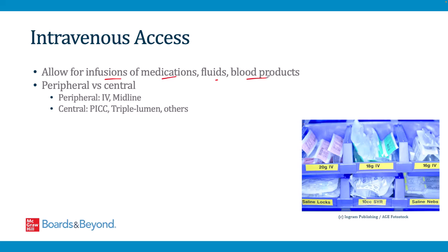IV access can be considered peripheral or central. Peripheral access is when the line terminates in a vein in an extremity, usually an arm, and can include standard IVs or midlines. Central intravenous access is when a catheter terminates in a central vein that feeds the right side of the heart — either the superior or inferior vena cava. Central lines include PICCs, triple lumen central lines, and others.